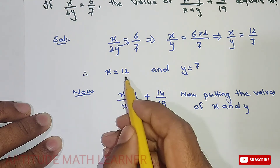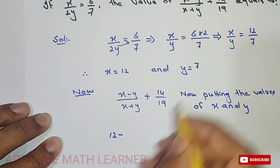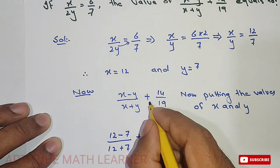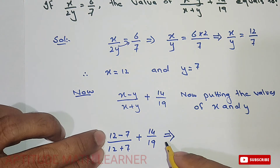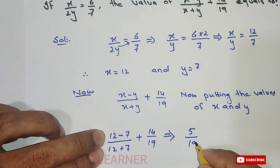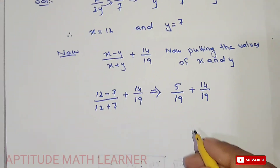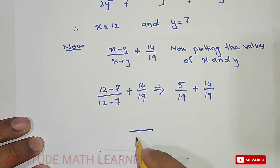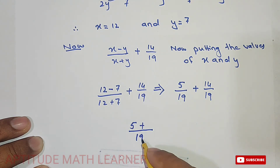For x we have 12 and for y we have 7. So it becomes 12 minus 7 upon 12 plus 7, plus 14 upon 19. That gives us 5 upon 19 plus 14 upon 19. Now we take the LCM as 19, so 19 and 19 are the same denominator.